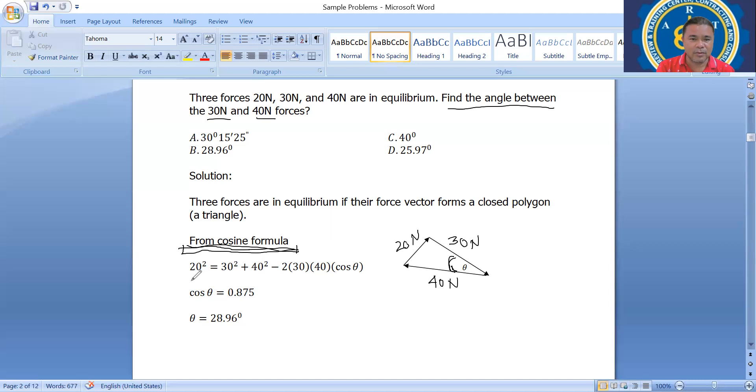So 20 squared equals to 30 squared plus 40 squared minus 2 times 30 times 40 times cosine theta. So the A squared equals to B squared plus C squared minus 2BC cosine theta. So this is the formula for the cosine.